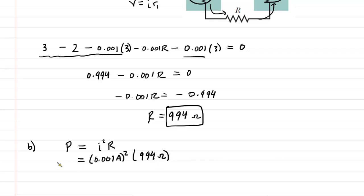When we do this, we get a power of approximately 9.94 times 10 to the minus four. And then this will come out into the standard unit of power, which is watts. So this would be the correct answer to part B.